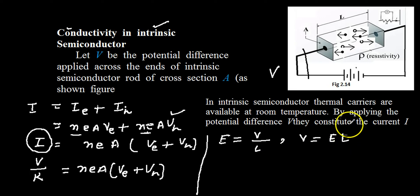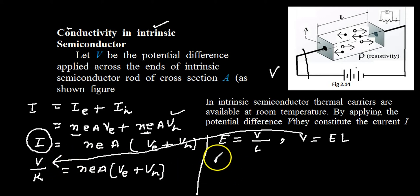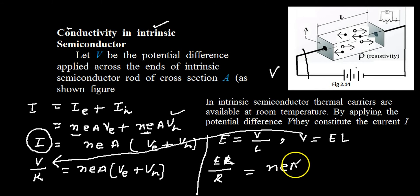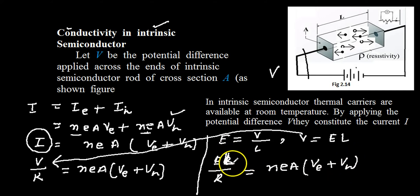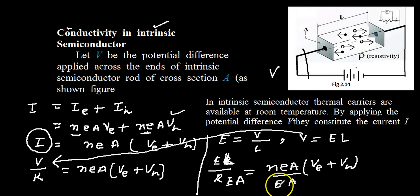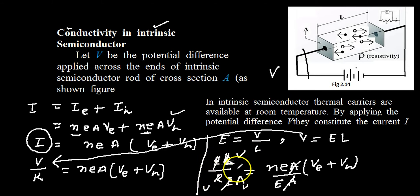Substituting V = E·L into the expression, we get E·L divided by R equals N·E·A·(Ve + Vh). Dividing both sides by E and A, the A's cancel and the E's cancel, leaving L/R·A on the left side. This quantity L/(R·A) is the expression for conductivity of this specimen — the conductivity of the intrinsic semiconductor.